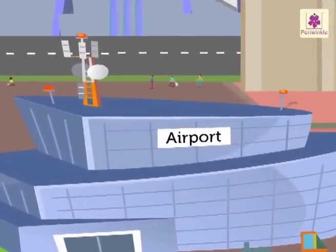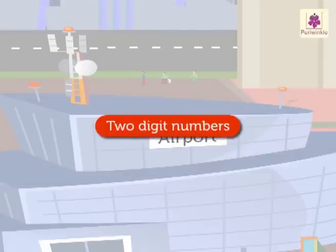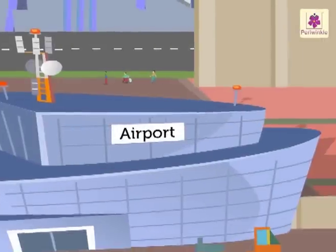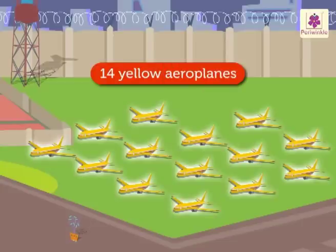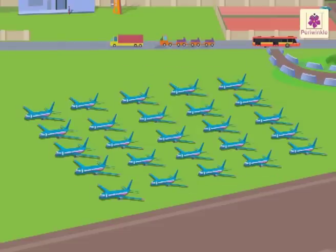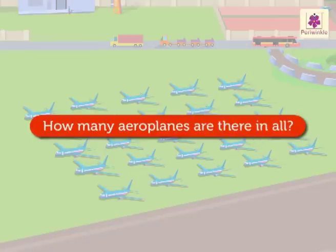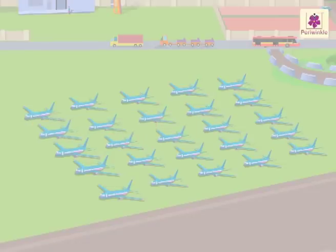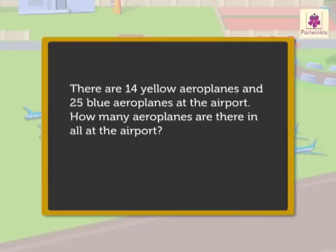Come, let us solve some stories with two digit numbers at the airport. There are 14 yellow aeroplanes and 25 blue aeroplanes at the airport. How many aeroplanes are there in all at the airport? First, we read this story. What information does it give? 14 yellow aeroplanes and 25 blue aeroplanes at the airport. Now let us see what we have to find out: how many aeroplanes are there in all?